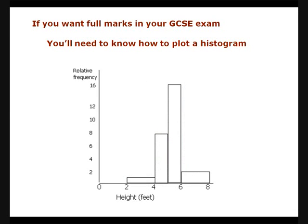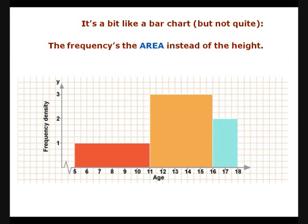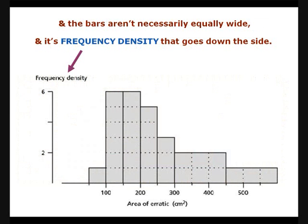If you want full marks in your GCSE exam, you need to know how to plot a histogram. It's a bit like a bar chart, but not quite. The frequency is the area instead of the height, and the bars are not necessarily equally wide. It's frequency density that goes down the side.